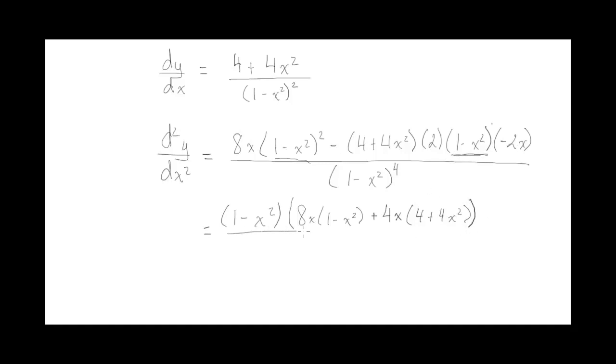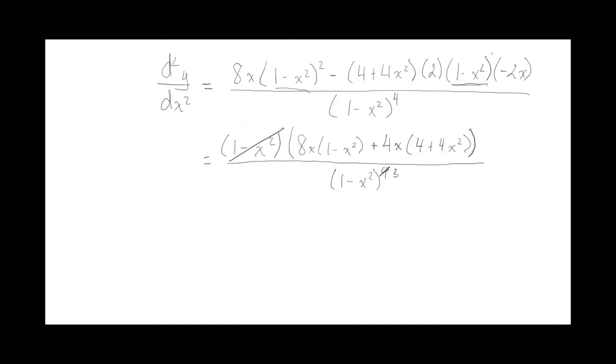All divided by 1 minus x squared to the power of 4. So notice I have 1 minus x squared and then I had 4, so one of them would cancel. So now I have to the power of 3.